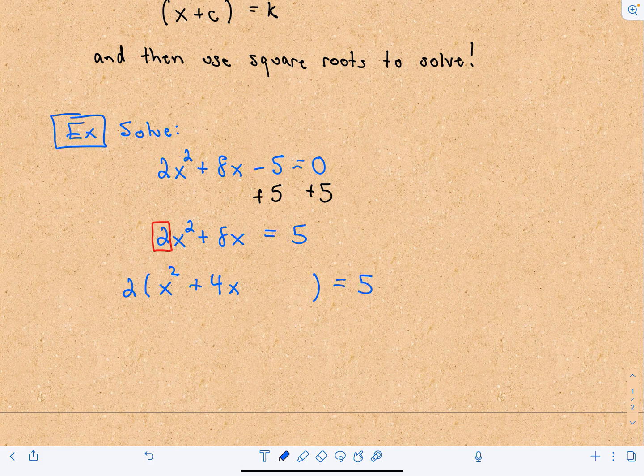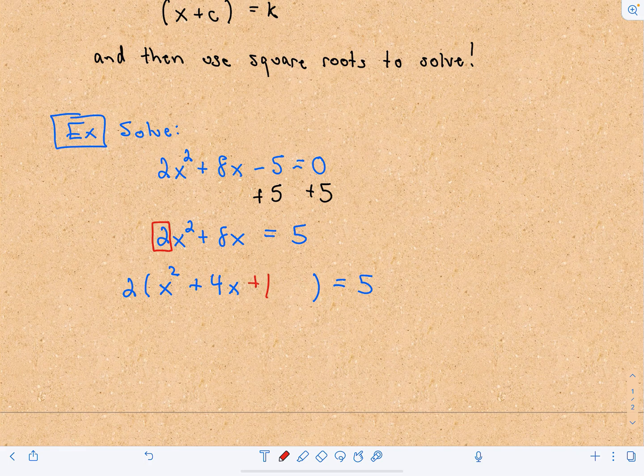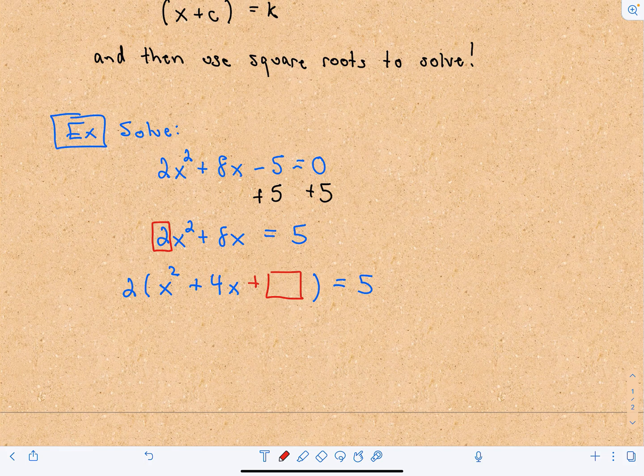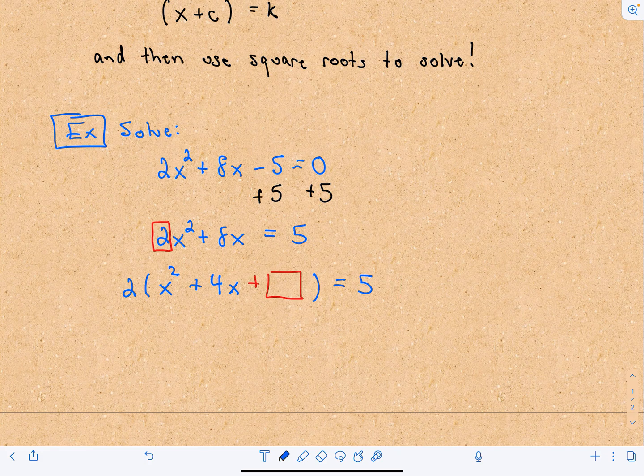A couple things are going to happen here. We're going to fill in some value, and that's going to be the goal. Now the question is, what number do we put in there? We're going to have to compensate too, because when we insert this new number to the left side, we're also going to have to add something to the same side.